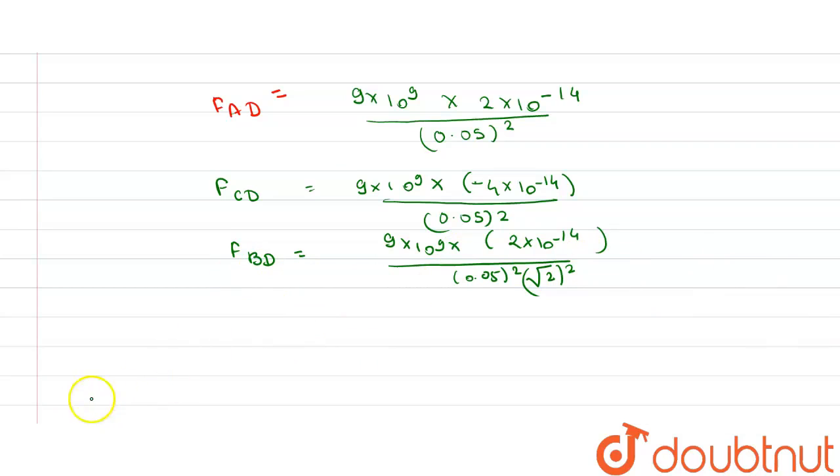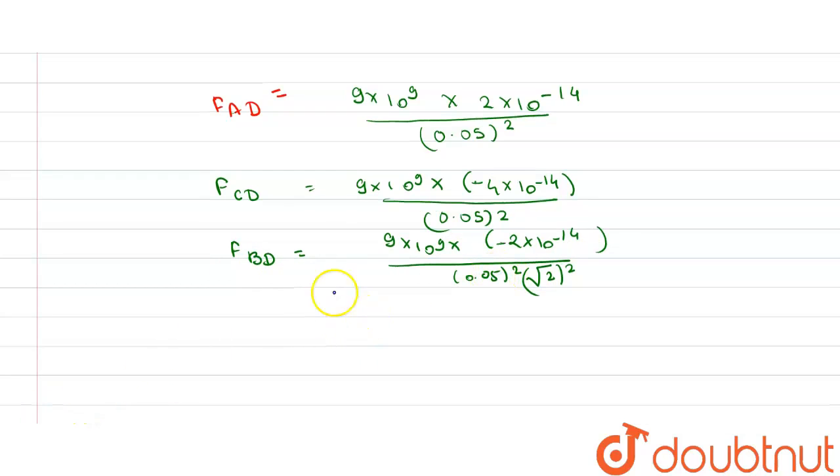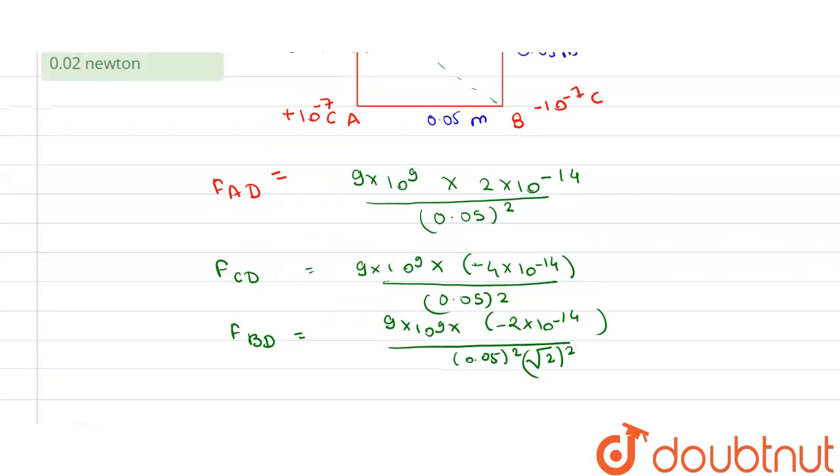And the resultant of all the forces is the addition of these all forces. So force on D due to A is equal to 0.072,